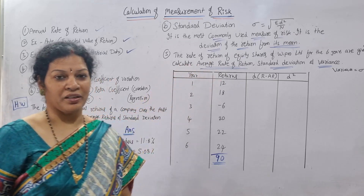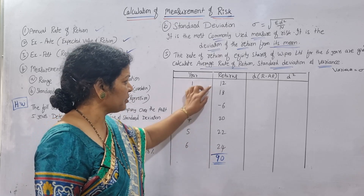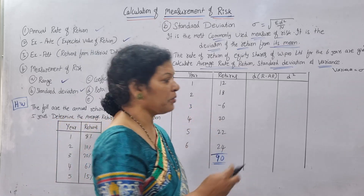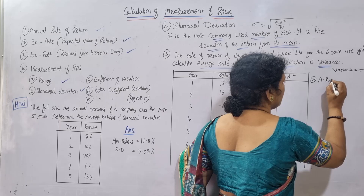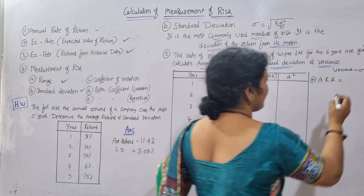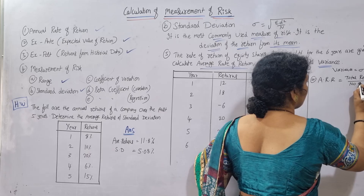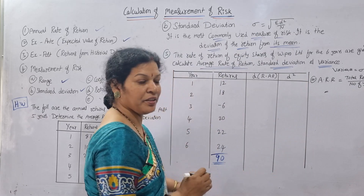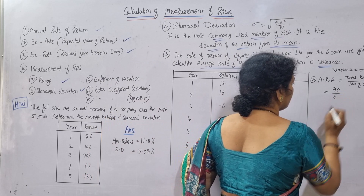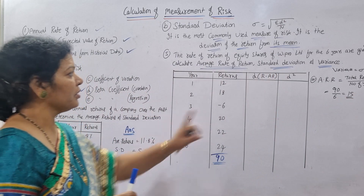First we calculate the average rate of return. The total of all returns: adding the positive values and deducting minus 6, we get 90. Average rate of return equals total returns divided by number of years: 90 divided by 6 equals 15. So the average return is 15%.